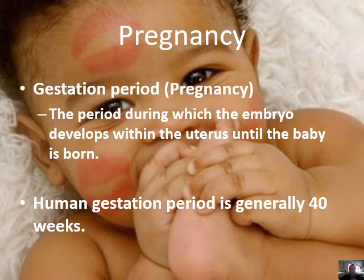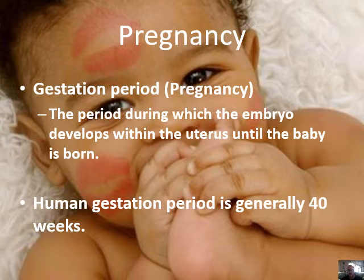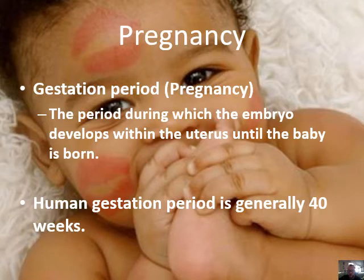So what is a gestation period? This is a definition I expect you to know: it is the period during which the embryo develops within the uterus until the baby is born. Note that the gestation period of different species is completely different — for instance, an elephant gestates for about two years, whereas the human gestation period is generally 40 weeks.